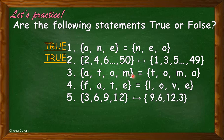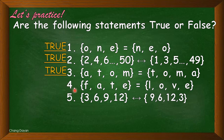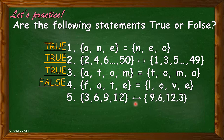For number three: {A, T, O, M} is equal to {T, O, M, E}. The answer is true — they are identical and have the same number of elements. For number four: {F, A, T} is equal to {L, O, V}. Our answer is false. For number five: {3, 6, 9, 12} is equivalent to {9, 6, 12, 3}. The correct answer is false — although they have the same number of elements, they also have identical elements, making it equal, not merely equivalent.